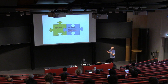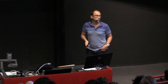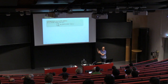They introduce the notion of average leave-one-out KL stability. An algorithm is gamma average leave-one-out KL stable if for all data sets, the sum of KL divergences between the output distribution of the algorithm on data set S and the output of the algorithm on the data set with element i removed, summed over all indices i, is at most gamma. It differs from differential privacy in three ways: it uses KL divergence instead of infinity divergence, it uses leave-one-out, and it averages over all indices.